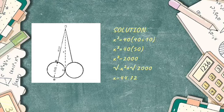So our solution will be x squared equals 40 times the quantity (40 plus 10). Now let's solve: 40 plus 10 is 50, times 40 equals 2,000. So we have x squared equal to 2,000.